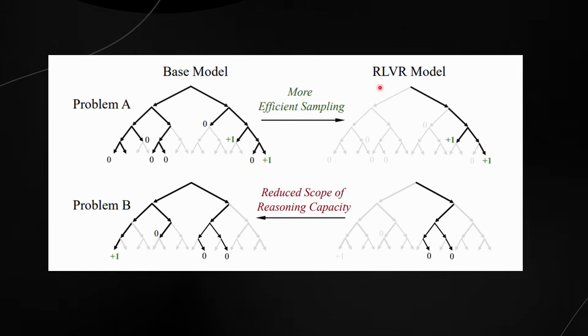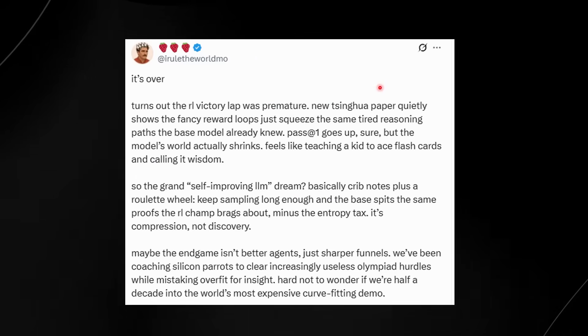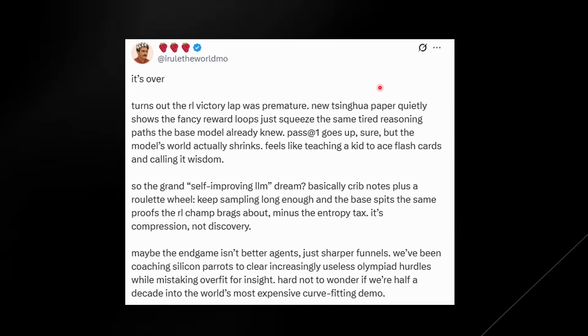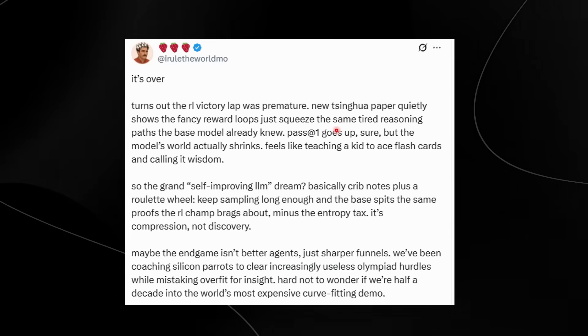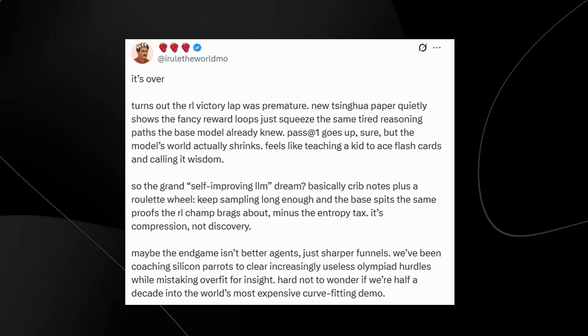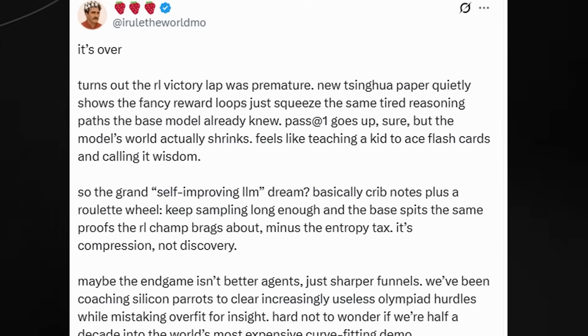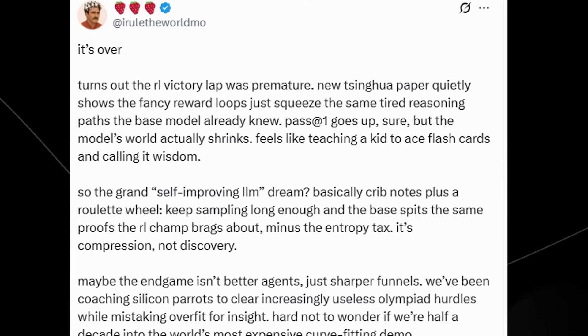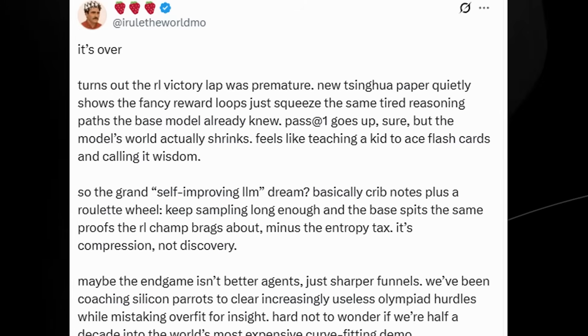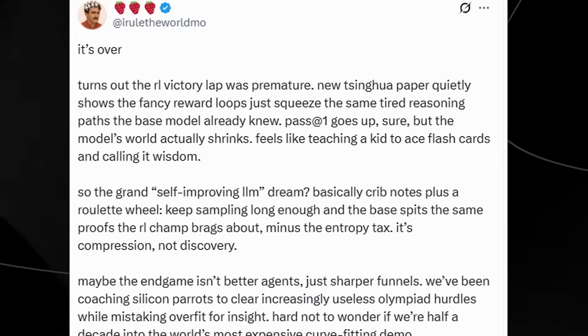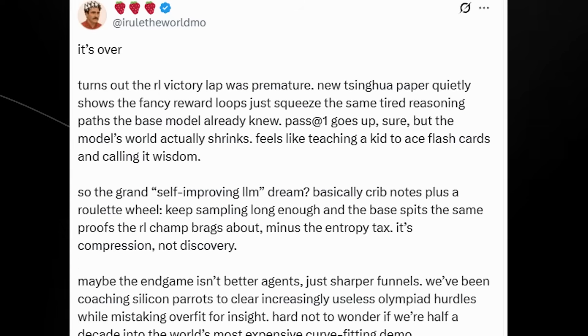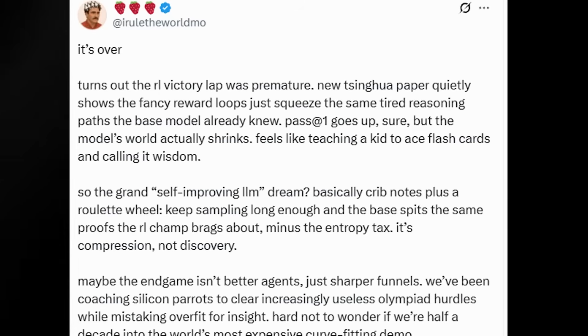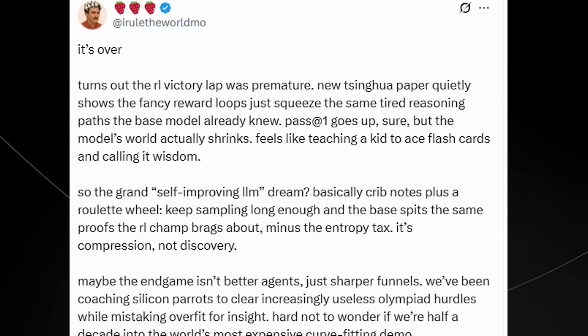The message here is that reinforcement learning improves efficiency—you're able to find answers quicker—but it reduces the flexibility because the model explores less and may miss answers it used to find. And basically, if the answers are hidden in the base model, which this paper states, then how do we know that we're not missing answers by training the models via reinforcement learning? This statement went semi-viral because it was pretty dramatic. He says that turns out the RL victory lap was premature. The new paper quietly shows the fancy reward loops just squeeze the same tired reasoning paths the base model already knew.